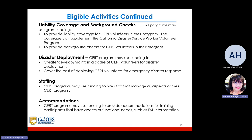Liability coverage and background checks: CERT programs may use the grant funding to provide liability coverage for CERT volunteers in their program, supplementing the California Disaster Service Worker Volunteer Program, and to provide background checks for CERT volunteers. Disaster deployment: CERT programs may use funds to create, develop, and maintain a cadre of CERT volunteers for disaster deployment and cover the costs of deploying CERT volunteers for emergency disaster response. Staffing: CERT programs may use funds to hire staff that manage all aspects of their CERT programs. Accommodations: CERT programs may use funding to provide accommodations for training participants with access or functional needs such as ESL interpretation.